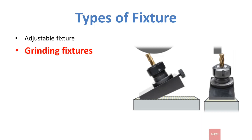The second type is the grinding fixture. Grinding fixtures are used to hold a workpiece while performing a grinding operation. Due to the grinding fixture, we can rotate the workpiece easily and can provide a desired angle to it.